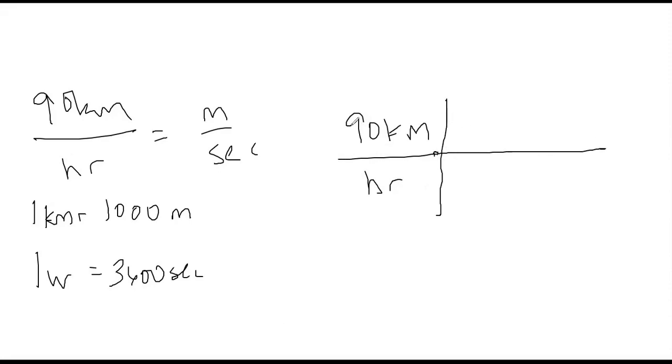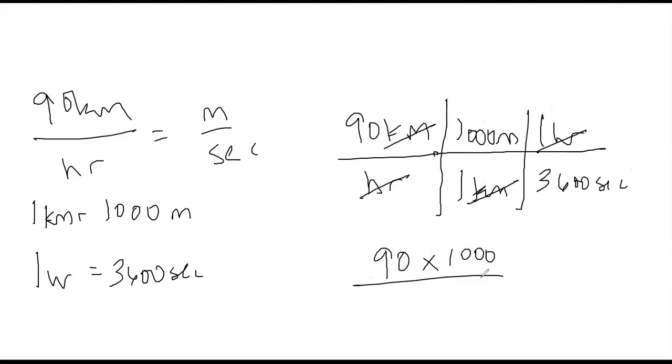So we start with 90 and this time we have kilometers over hours. So we have to do the top and the bottom. We'll start with the top. One kilometer has 1000 meters in it. And then we got to get rid of the hours too, so we got to put our hours up top here and our seconds on the bottom. Hours cancel.